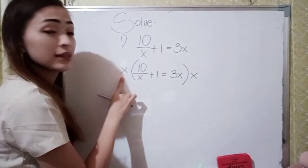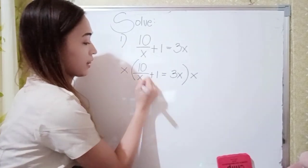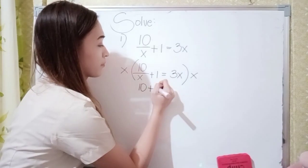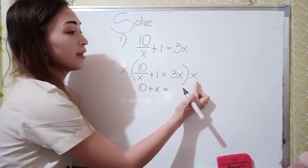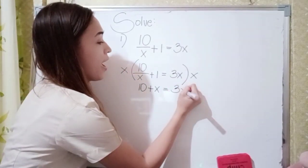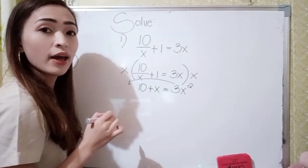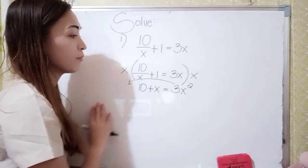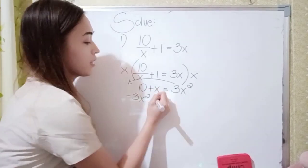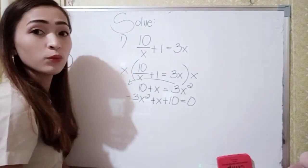x divided by x is 1, so 1 times 10 is 10. Next, x times 1 is x equals 3 times 3x, which is 3x squared. Now let's transpose this to the left and write it into standard form. It will become negative 3x squared plus x plus 10 equal to 0.